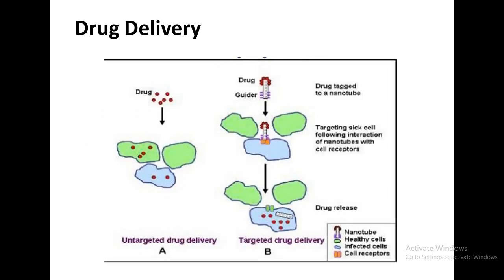Now we are going to discuss the drug delivery system. Targeted drug delivery systems are currently the most common nanomedicine products. They work by delivering medicine to a disease area, targeting the particular cell, tissue, or organ, whereas through normal drug delivery, the drug would be administered through the blood supply, which results in a large area being affected. In this picture you can see two types: the untargeted drug delivery system and the targeted drug delivery system.